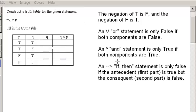In this particular truth table, we're looking at the statement NOT Q OR P. So there are two logic symbols in this statement, the negation and the OR.